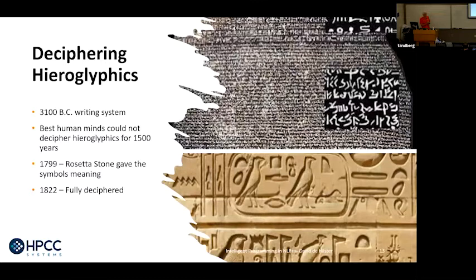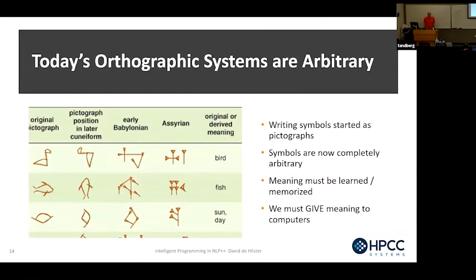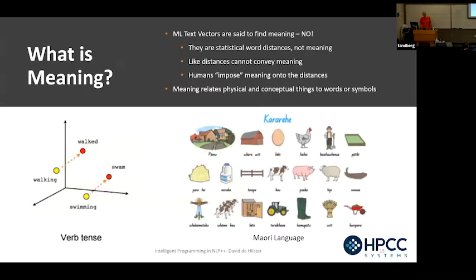Let's get back to why machine learning can't learn meaning. If you look at hieroglyphics, it's 5,000 years old. Human beings spent 1,500 years trying to decipher it. I would consider a human being today to be the best learning neural network machine learning tool we have — and yet it could get nothing out of it. It wasn't until 1799 when the Rosetta Stone came along with Sanskrit that by 1822 they could finally decipher hieroglyphics.